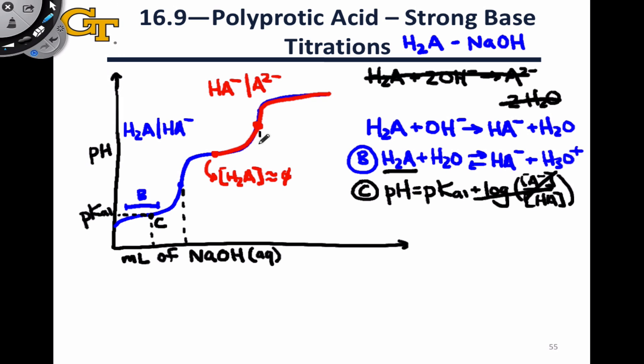At the second equivalence point, we've added enough hydroxide to consume all of the HA- to form A2- completely. And although I haven't done a great job of drawing this, because the total amount of polyprotic acid hasn't changed over the course of this titration, since the analyte beaker has just been sitting there, we haven't added any additional acid to it, the volume required to reach the first equivalence point times 2 equals the volume required to reach the second equivalence point.